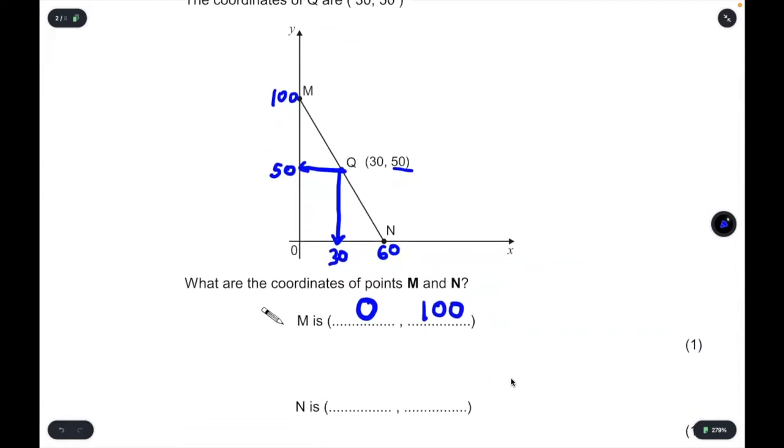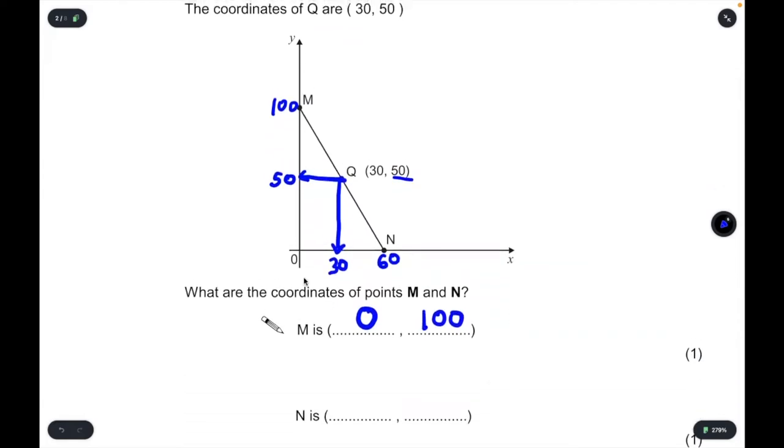Meanwhile, it also asks us about N. So N's x-coordinate is 60. And N's y-coordinate is 0 because it hasn't gone off the x-axis at all.